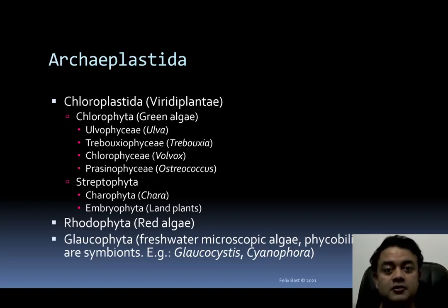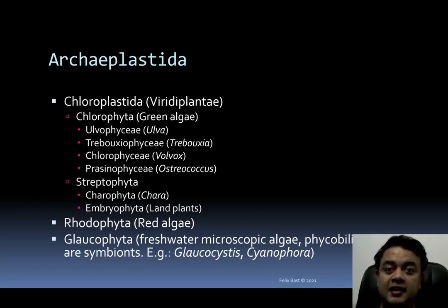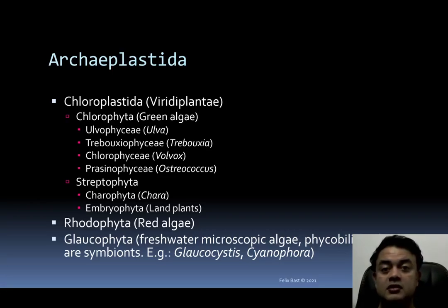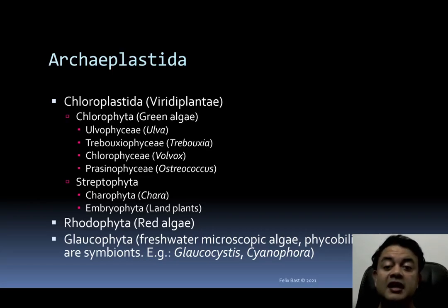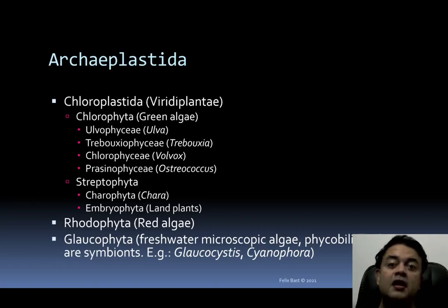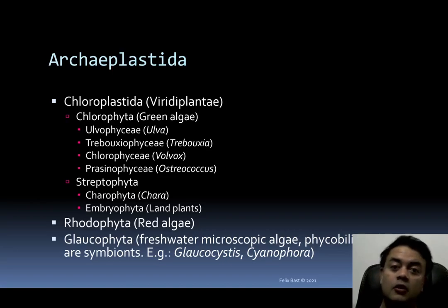Examples: Ulvophyceae — Ulva, the green seaweed; Trebouxiophyceae — Trebouxia, the lichen phycobiont; Chlorophyceae — Volvox, the colonial unicellular alga; Prasinophyceae — Osteococcus. Coming to Streptophyta, Charophyta — Chara is an example, and is very similar to the most recent common ancestor of all embryophytes (land plants).